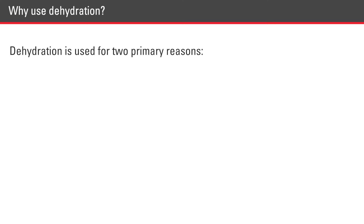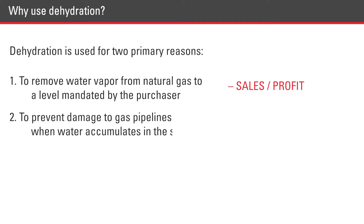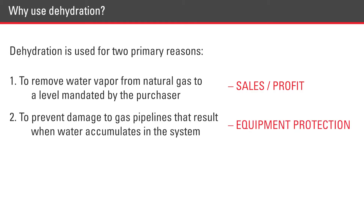Dehydration is used for two primary reasons: to remove water vapor from natural gas to a level mandated by the purchaser, and to prevent damage to gas pipelines that result when water accumulates in the system.